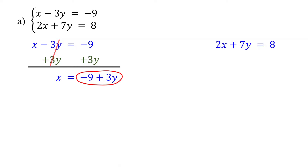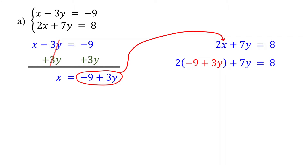Now that we have x by itself, the next step is to substitute this expression into the second equation for x. That is why it is called the substitution method. As you can see, we now have an equation with just one variable, and we know how to solve this.